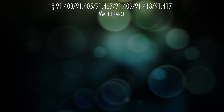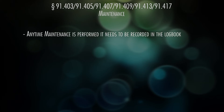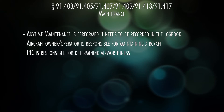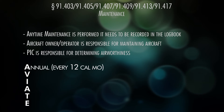The rest of Part 91 is about maintenance. Anytime maintenance is performed, it has to be recorded in the maintenance logbook. As the owner or operator, you have to make sure the airplane is maintained properly, and as pilot in command you have to make sure the airplane is airworthy. To do that, you have to comply with inspections summarized by the acronym AVIATE: Annual inspection within the preceding 12 calendar months; VOR check within the preceding 30 days if flying IFR.